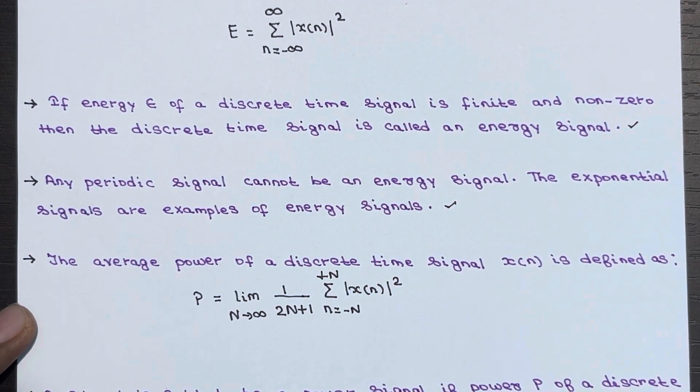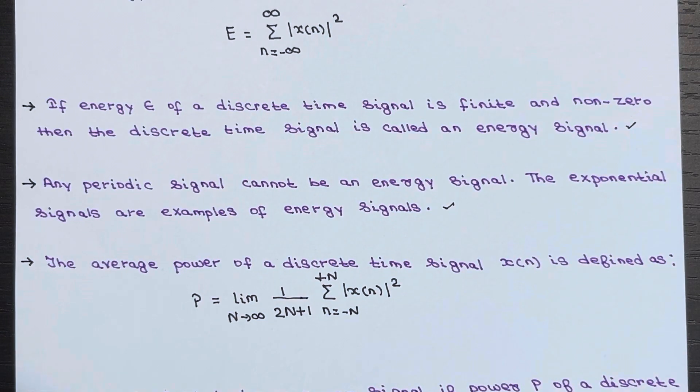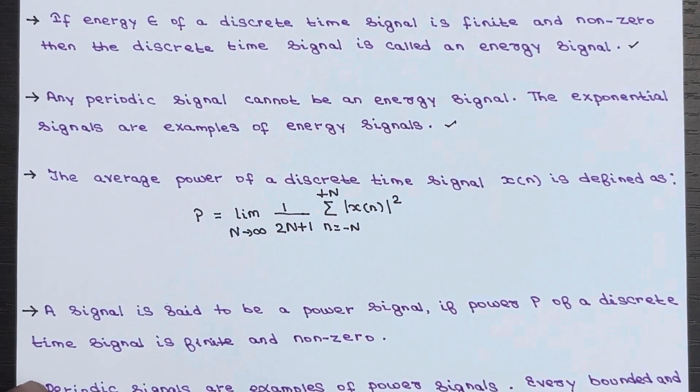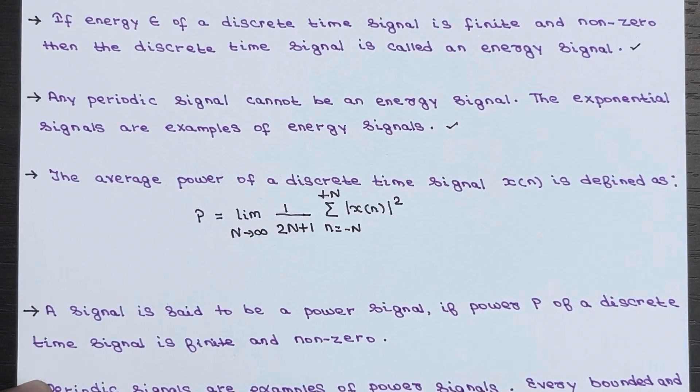So this is the average power of a discrete-time signal x(n).